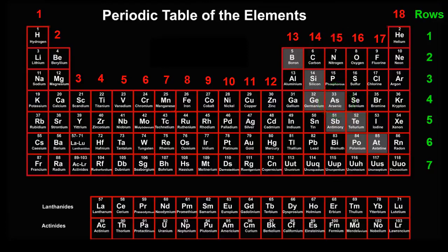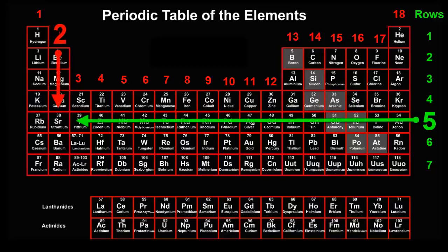But what if you were asked which element is in row 5 and group 2? There can only be one answer. Strontium. Each element has its own unique combination of row and group.